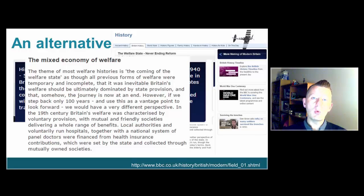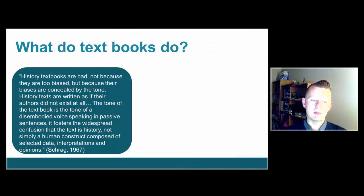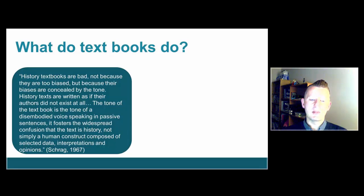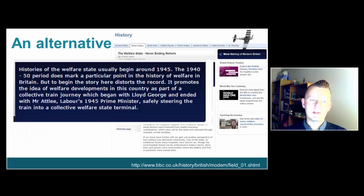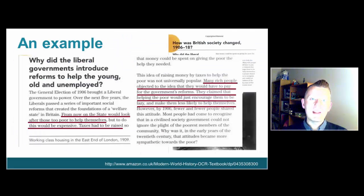So just by opening up with two contrasting accounts of history, I'm illustrating some of the reasons why textbook construction has been seen as particularly problematic within academia. Here's a quote from Schrag: 'History textbooks are bad not because they're biased but because their biases are concealed by the tone. History texts are generally written as if their authors didn't exist at all — the tone is that of a disembodied voice speaking in passive sentences. It fosters the widespread confusion that the text is history, not simply a human construct composed of selected data, interpretations, and opinions.'